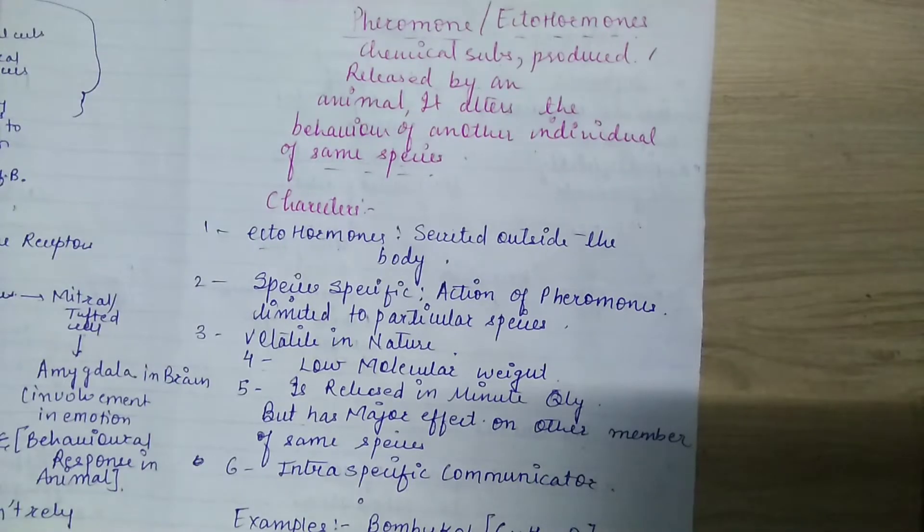First, it is necessary to know what is the definition of pheromones and why pheromones are secreted. Basically, many times we see animals such as dogs and cats peeing on some landmarks or fire hydrants. Now the question arises: why are these animals peeing over these things?